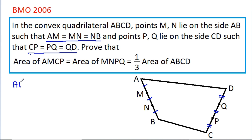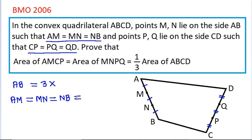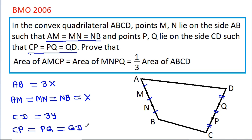So suppose AB is 3x. Then AM is equal to MN is equal to NB, it will be x. And suppose CD is 3y. Then CP is equal to PQ is equal to QD, it will be y.